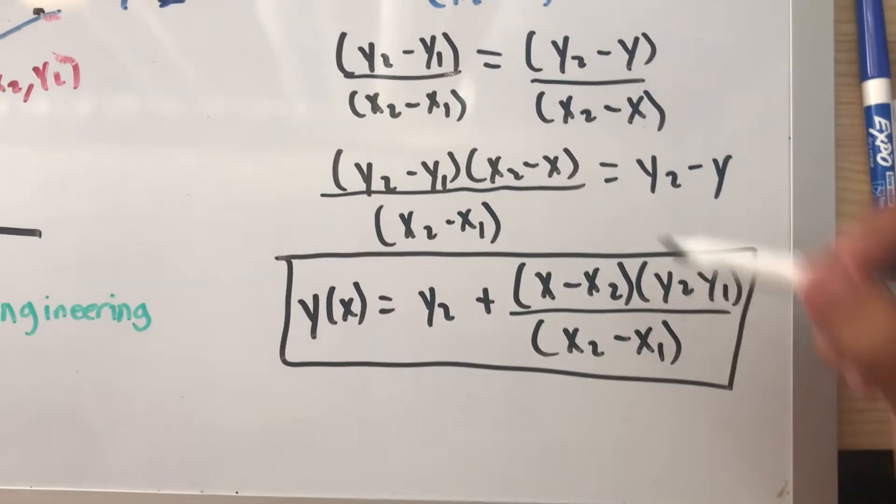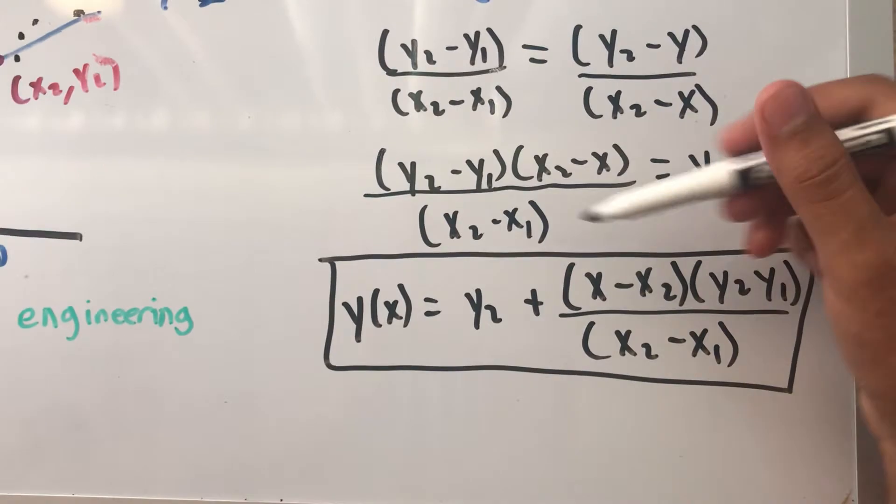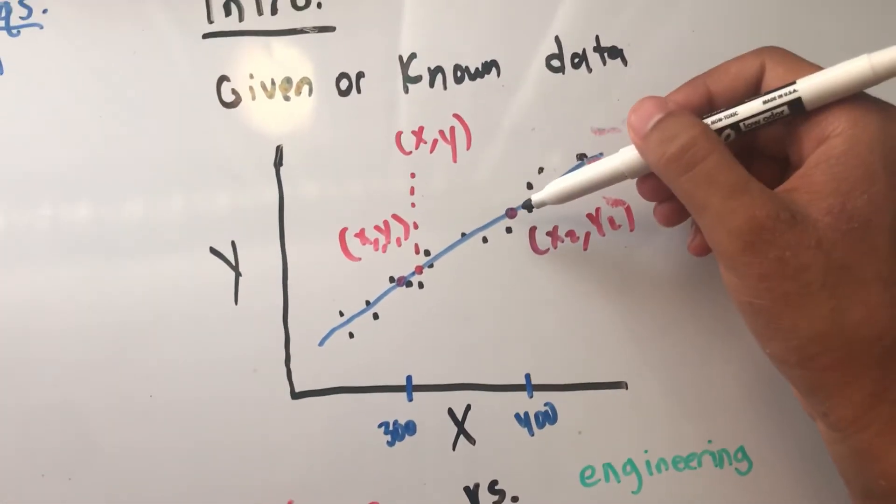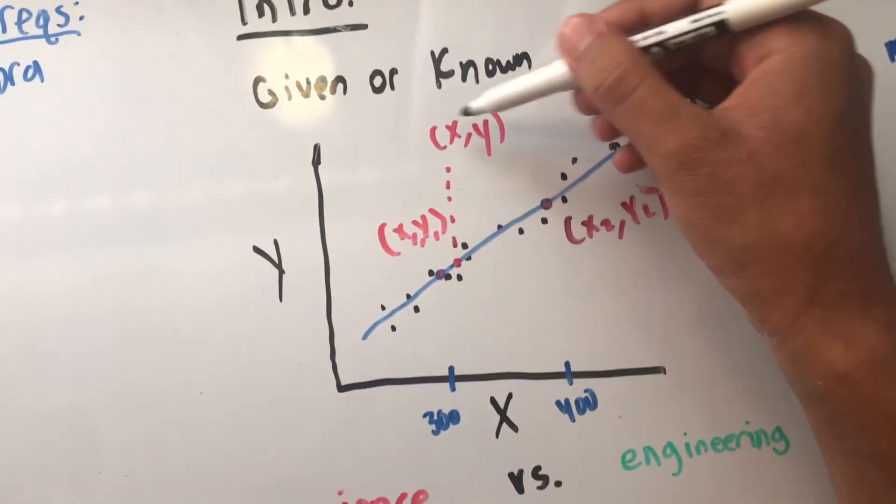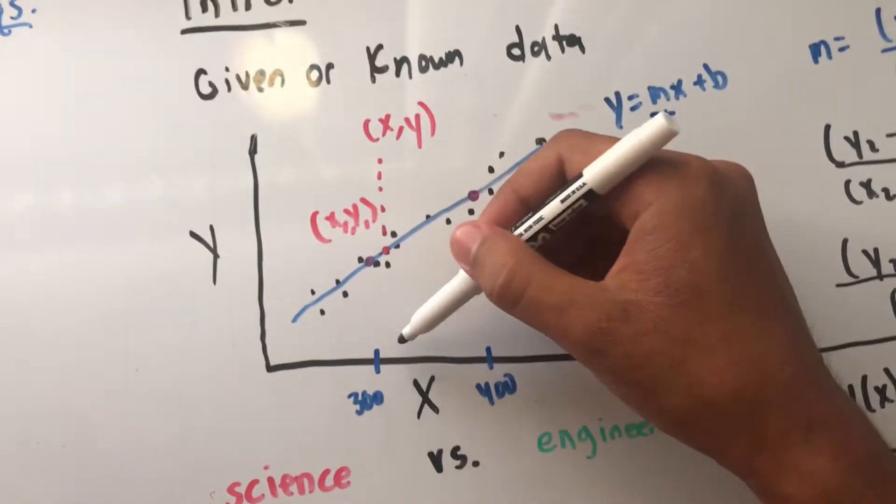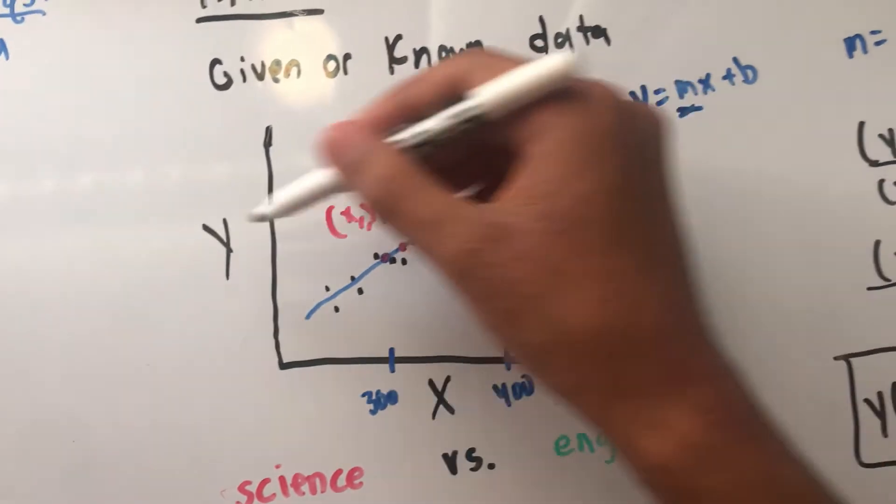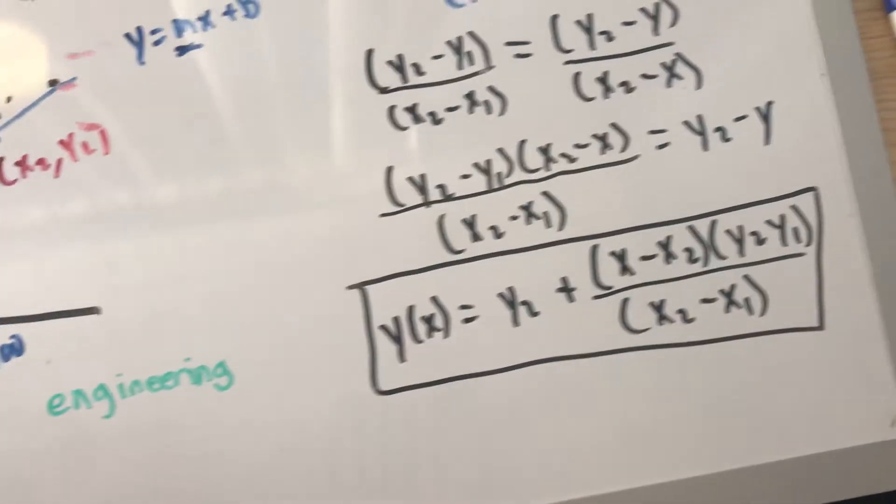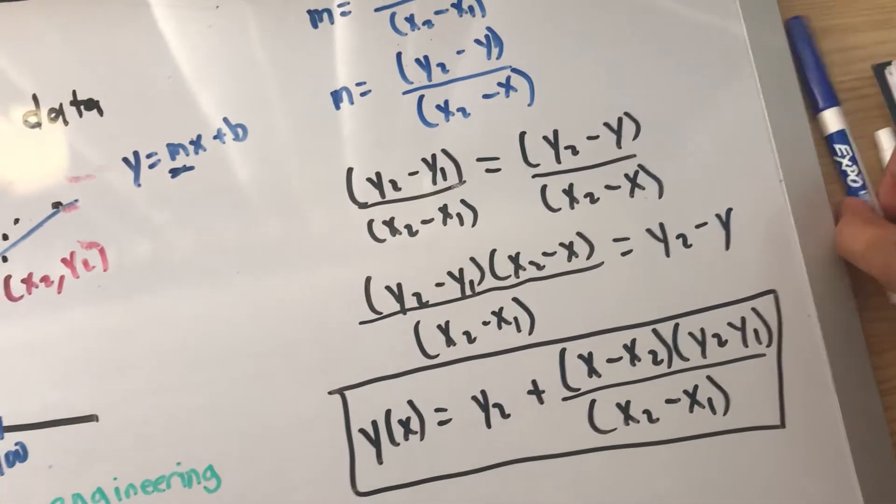In other words, if I plug in two values for these two points that I know the values of, and I want to know at a point in between, for example 305, then I can solve for whatever value that is. You just plug and chug.